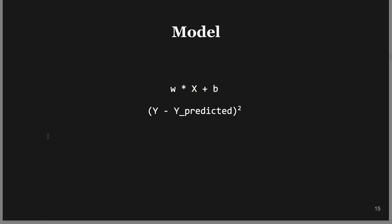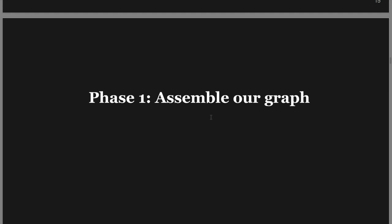We are going to use a very simple linear model where we multiply x by w, add a bias term, and that gives us a prediction. The predicted value of y is w*x + b. The loss is (y - y_predicted)^2. The way you do training is you come up with a prediction, calculate the loss, and try to minimize it — TensorFlow will adjust the trainable variables w and b to keep y and y_predicted as close as possible.